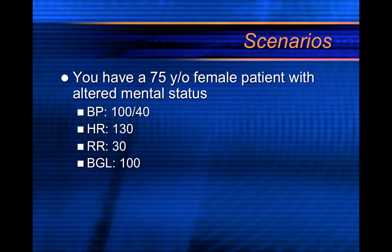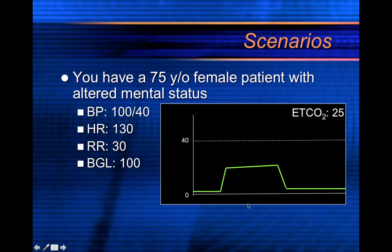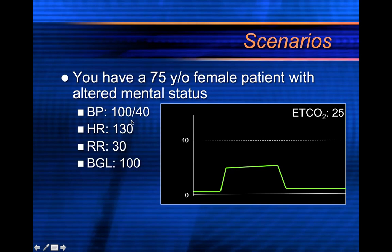Scenario three: you respond to a 75-year-old female with altered mental status. Blood pressure is 100/40, heart rate is 130 — tachycardic — respiratory rate is 30, blood glucose is 100. Nursing staff tells you her blood pressure is very low for her — she's normally hypertensive. So we have hypotension with tachycardia, which suggests compensated shock, along with tachypnea and a normal blood glucose.